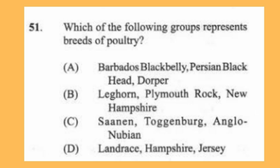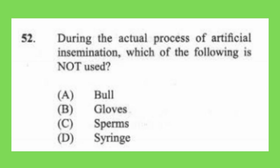Question 51: Which of the following groups represents breeds of poultry? (a) Barbados Black Belly, Persian Blackhead, Dorper, (b) Leghorn, Plymouth Rock, New Hampshire, (c) Saanen, Toggenburg, Anglo-Nubian, (d) Landrace, Hampshire, Jersey. The answer is B, Leghorn, Plymouth Rock, New Hampshire.